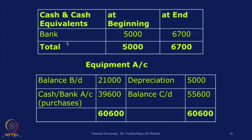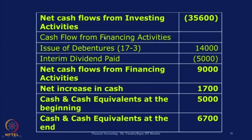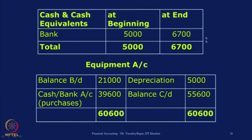We also need to make a reconciliation statement showing cash and cash equivalents at the beginning and at the end. This problem has only one item, but sometimes there can be 2-3 items. Show them and take the total: bank opening 5,000, closing 6,700 — the totals are the same, 5,000 and 6,700. Equipment was a working note. For the complete cash flow statement, start with operating items, then investing, then financing, add opening and closing, and also show the reconciliation of cash and cash equivalents. Then the cash flow statement is complete.